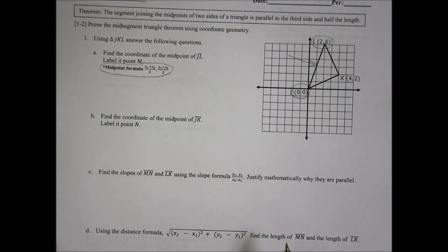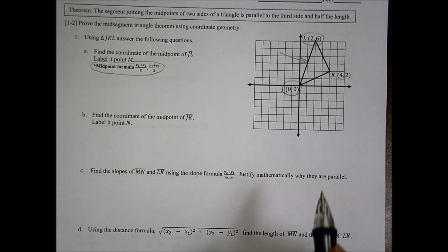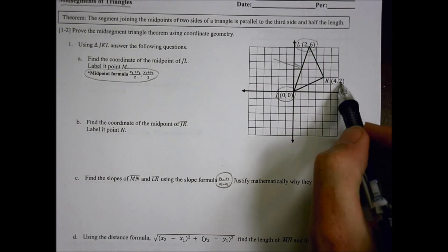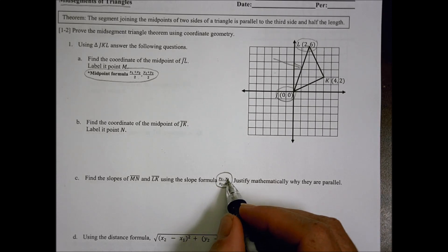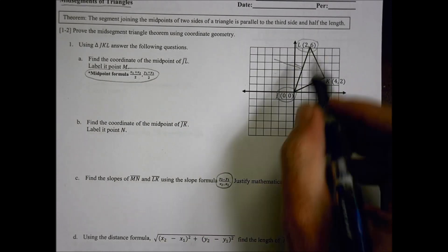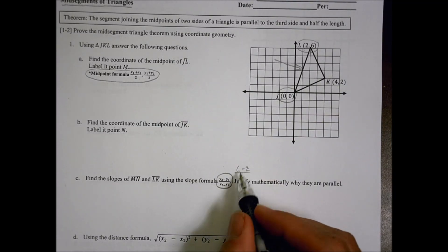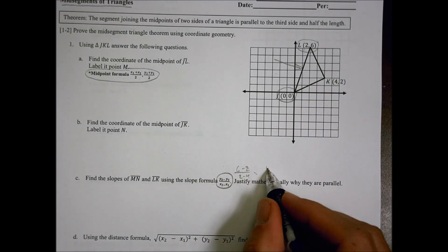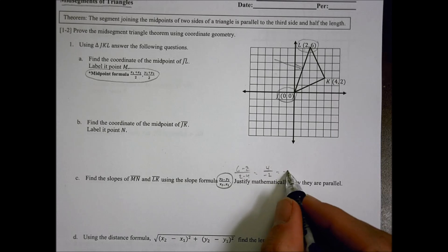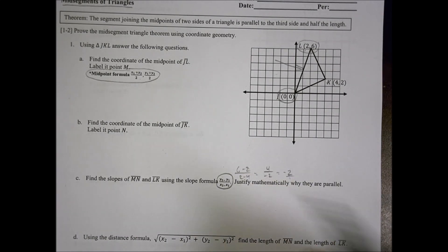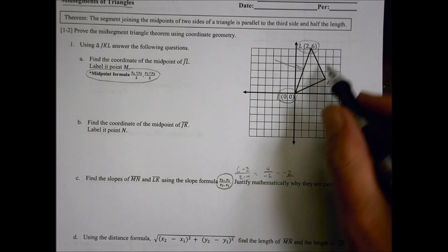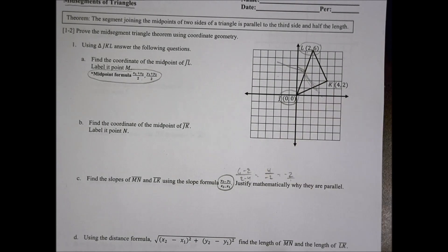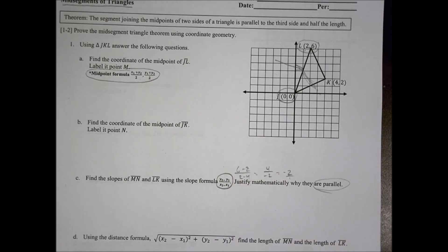To find the slope of a line, you use this formula: y₂ minus y₁ divided by x₂ minus x₁. For example, with points (2, 6) and (4, 2), you do 6 minus 2 over 2 minus 4, which gives you 4 over negative 2, which reduces to negative 2 as the slope. For a mid-segment, you'll have two lines to compare, and if they are parallel they have the same slope — that's how you prove it.